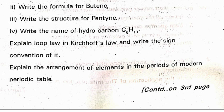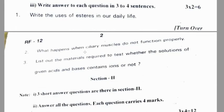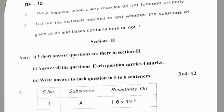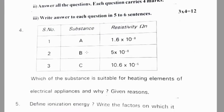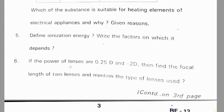Explain the arrangement of elements in the periods of the modern periodic table. This is the Rangareddy district pre-final question paper. Write the uses of esters in our daily life — if uses are asking, make a note. What happens when ciliary muscles do not function properly? List out the materials required to test whether the solution of given acids and bases contains ions or not. Section 2 has one table question. Define ionization energy and write the factors on which it depends. If the power of lenses are 0.25D and minus 2D, find the focal length of two lenses and mention the types of lenses used.